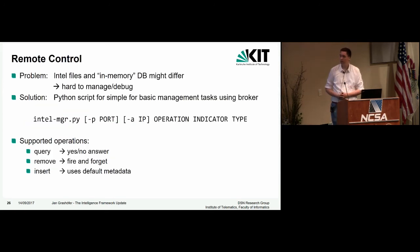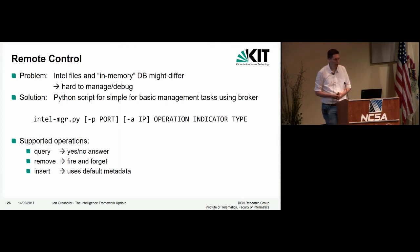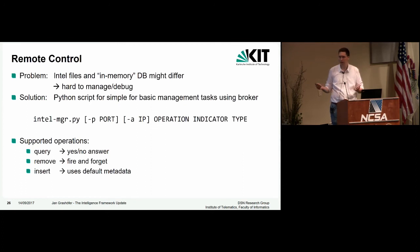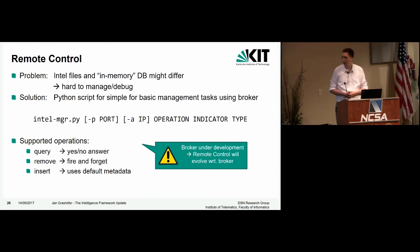There's another thing in the Intel extensions: remote control. The problem is that Intel files and the internal representation of intelligence data might differ, making it hard to manage and debug what's actually inside Bro. Using the new broker framework, I wrote a Python script to interoperate with Bro. It currently supports three operations: querying for intelligence to see whether it's inside Bro, removing an item if you've accidentally added something generating too many hits, and inserting something — though currently it just uses default metadata.